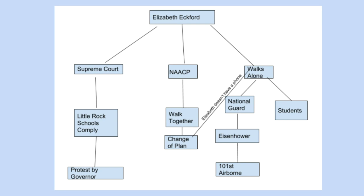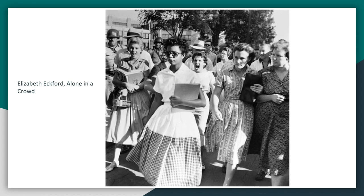The NAACP was on the students' side. They had a plan for all the students to walk together with adults into school on that first day, but at the last minute there was a change of plan, and Elizabeth's family didn't have a phone, so they were unable to get a hold of her, and she didn't know about the change of plan. That meant that she walked alone into school surrounded by a mob of people — you can see all these people following her, and many very angry people.